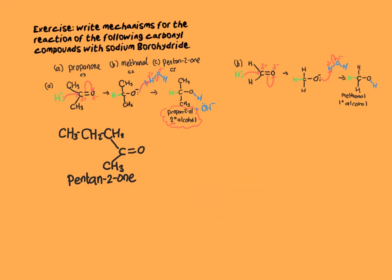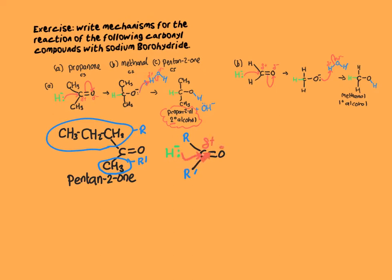In the next reaction we're going to look at pentan-2-one, but it's quite cumbersome to draw the whole molecule when writing out a mechanism. So we use a trick where we represent part of the molecule as R for the rest of the molecule, and the methyl group as R dash. This makes the mechanism much easier to see. The mechanism is identical to the ones before — the hydride ion nucleophile attacks the electron-deficient carbon atom, the pi electrons move onto the oxygen, and the intermediate with a negatively charged oxygen is represented with R groups. There's the lone pair of electrons on the oxygen and the hydrogen atom attached from the hydride ion.